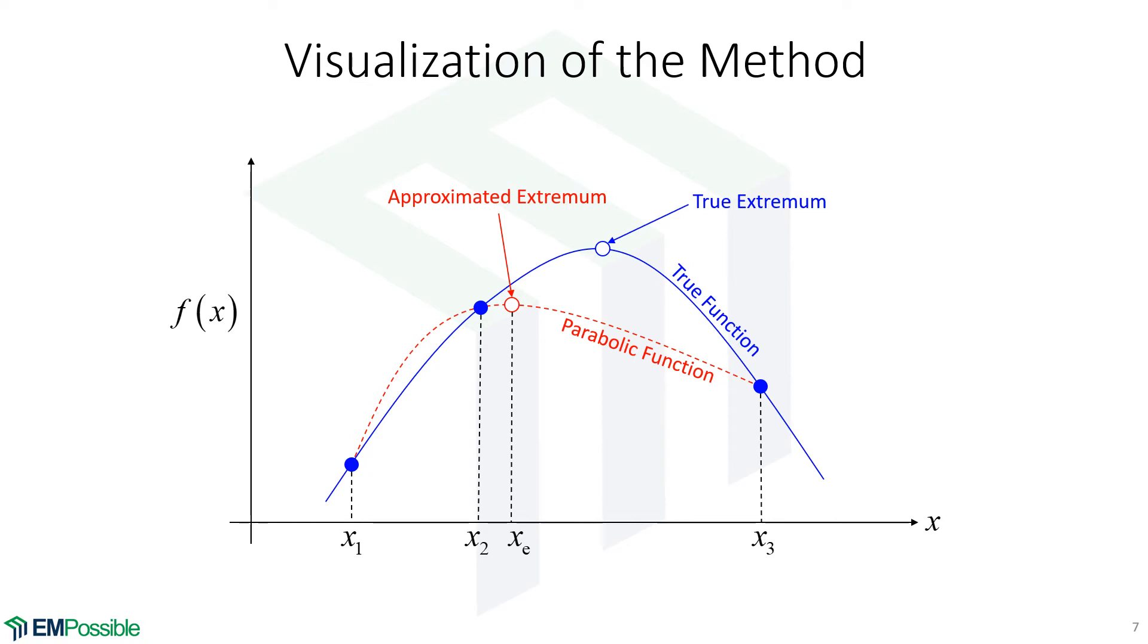So here's a visualization of how this is working. Let's just say our true function is in the blue line. And so we have a true extremum here. Then we pick our three points that are spanning this extrema. We're showing these with these blue dots. If we fit those blue dots to a polynomial, in fact, this is the polynomial that we're getting. And so if we find the extrema of this polynomial, we end up here.